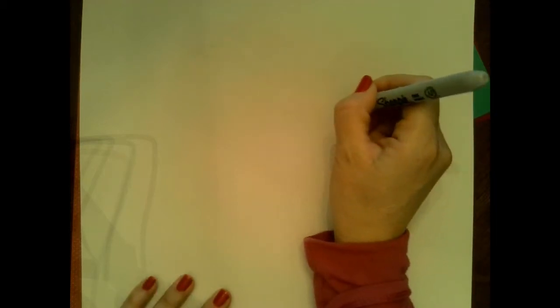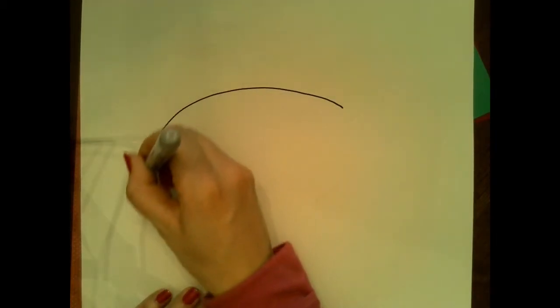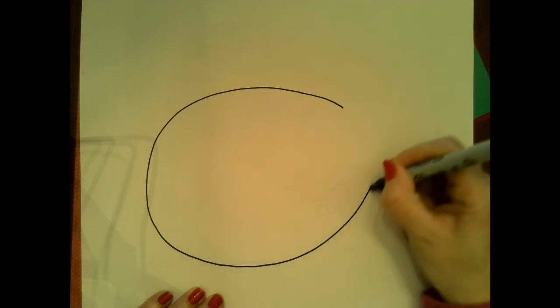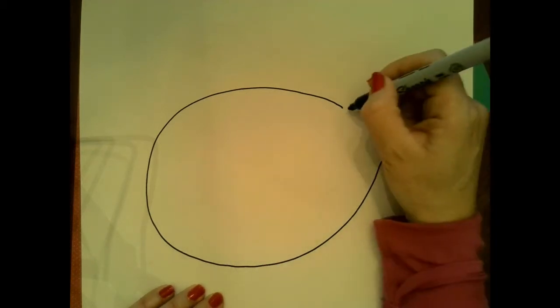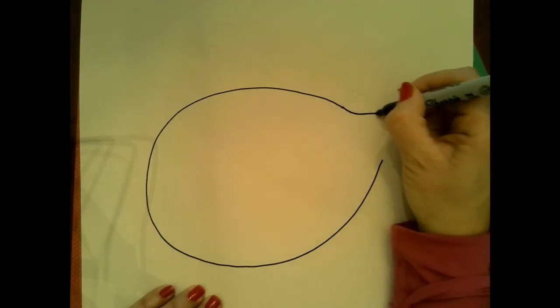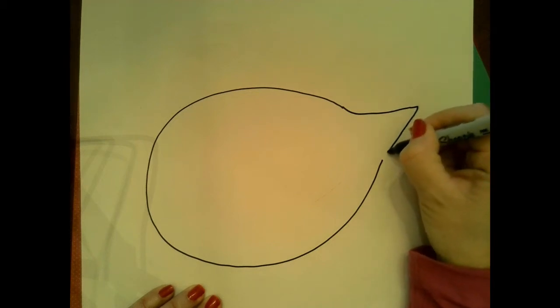So we're going to start with a rounded shape, almost like a big oval. And notice I'm only making about three quarters of the oval. Because on this part of the oval, I'm going to go up to kind of a point. And this is where his nose will be located.